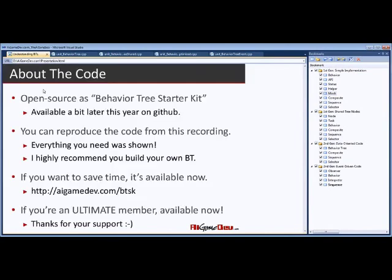Q: What's the memory budget for behavior trees? Each node is typically between 16 and 128 bytes depending on type. The overall tree could be between 100 and 200 nodes — some even bigger. First generation trees are smaller, around 50 nodes. We're talking kilobytes overall, and it's really not that much memory, especially if you store the common data in one single location.